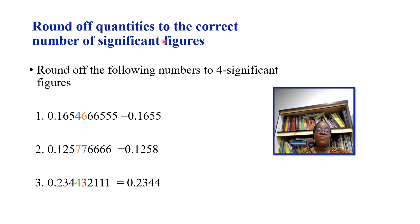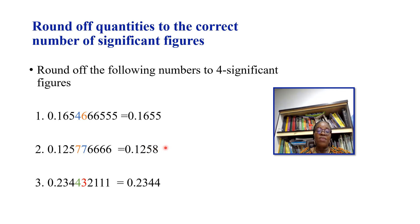Rounding quantities to a given number of significant figures: approximate the last figure upward by 1 if the next figure is equal to or greater than 5. For example, round 0.16546666 to 4 significant figures. The leading zero is non-significant, so we count 1, 6, 5, 4 — the next digit is 6, which is greater than 5, so we round up: 4 becomes 5. The answer is 0.1655.